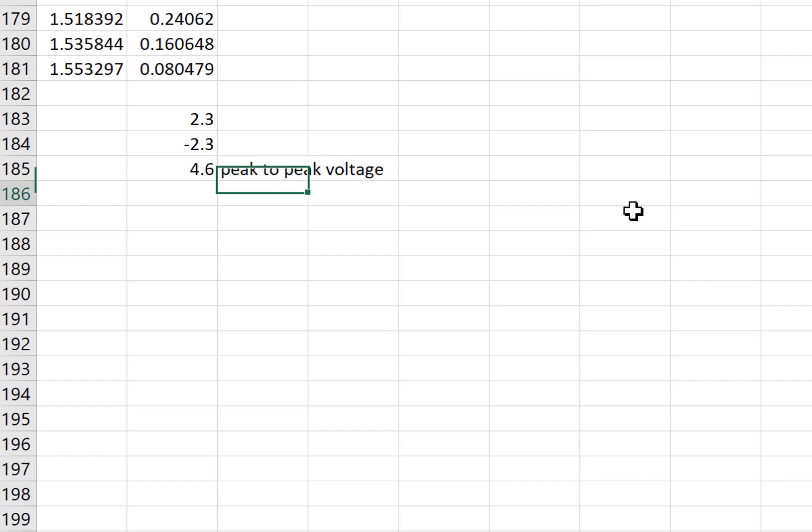Now I would do that for each of my columns of data. This data might be for a 30 centimeter drop height, and then maybe I've got a 40 centimeter drop height and a 50 centimeter drop height. I don't remember the numbers off hand, but you do that for each column of data. You do this and then you're going to graph the peak to peak voltage versus drop height.